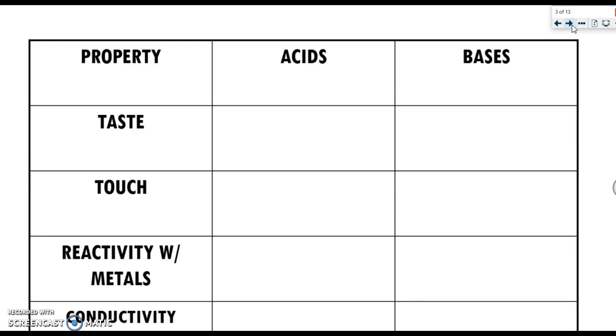First thing we need to do is kind of discuss what an acid is and what a base is. Things that are acidic usually are going to start with H. So like HCl, HNO3, H2SO4. Things that are bases usually end in OH, like NaOH, KOH, MgOH2.